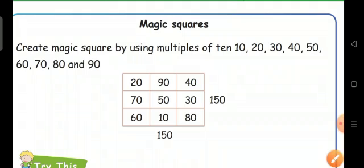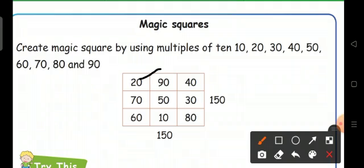Here write this row 20, 90, 40 and next here 70, 50, 30 and this row we write 60, 10, 80.